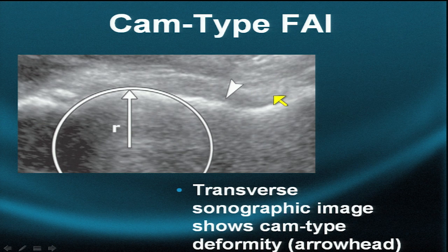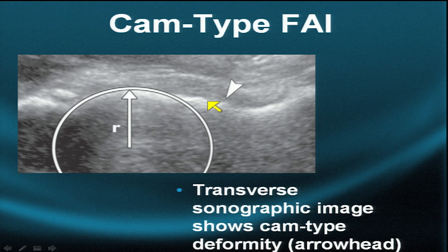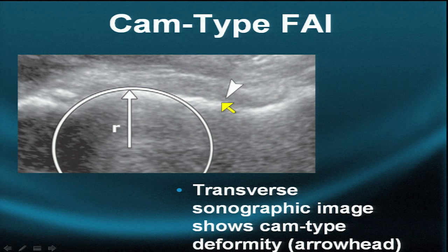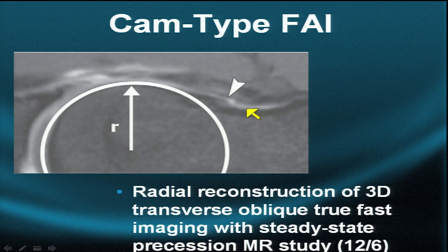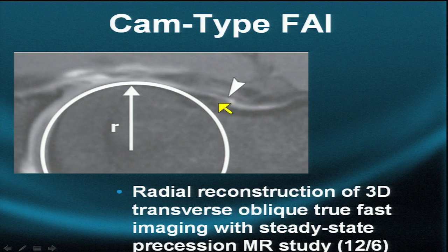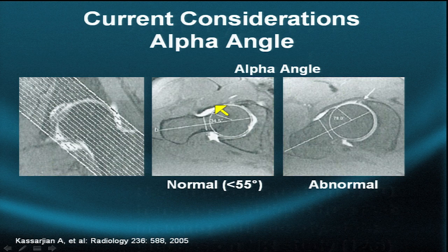This transverse oblique sonogram demonstrates the transition between the neck and the head, showing a little bit of thickening at the head-neck junction consistent with early bumps — bumps in cam type impingement. Here are the same bumps seen on a radial paraxial reconstruction at the femoral head-neck junction: so-called loss of sphericity, so-called loss of tapering, as a sign of cam type impingement.